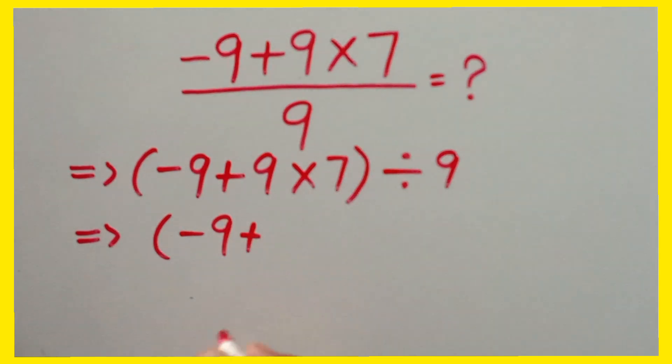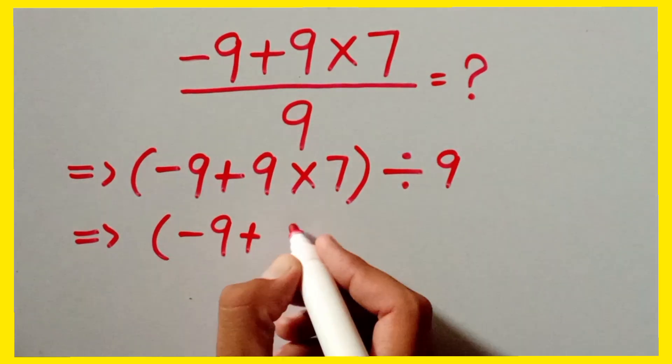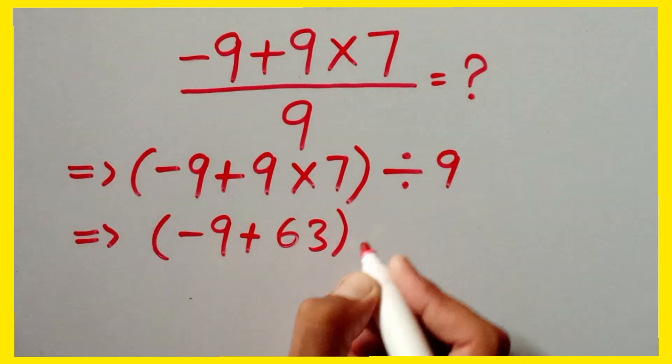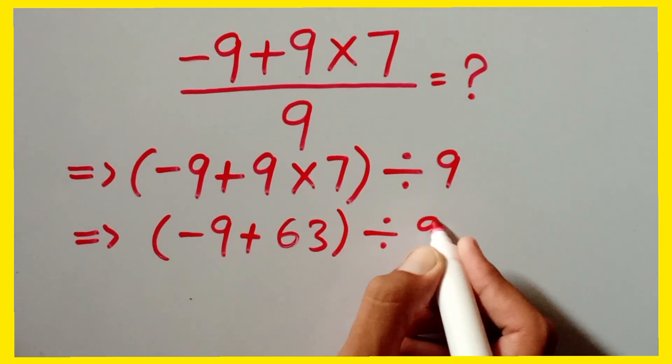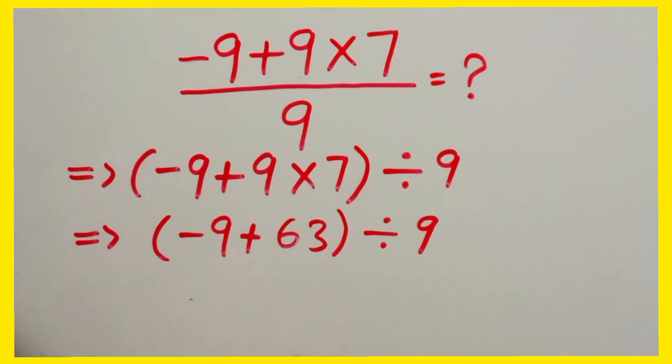Minus 9 plus 9 times 7 is 63, divided by 9. Now 63 minus 9, which is equal to 54.